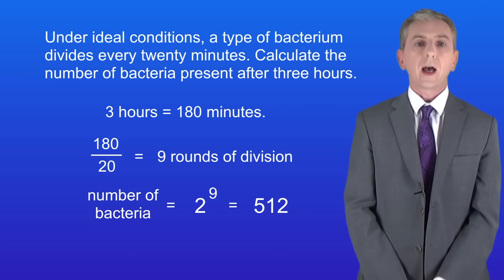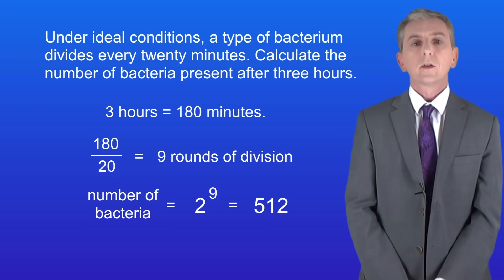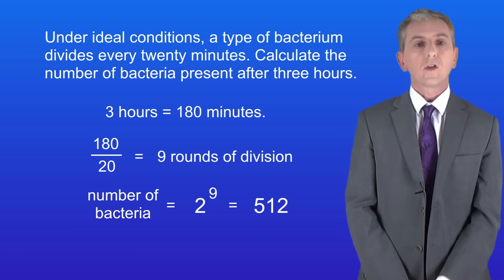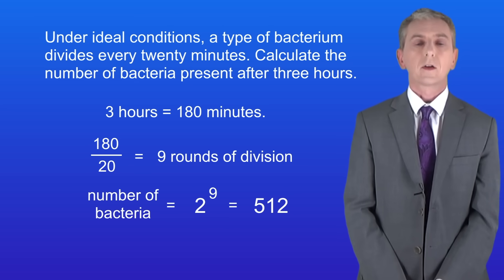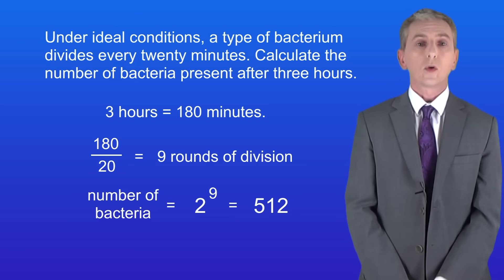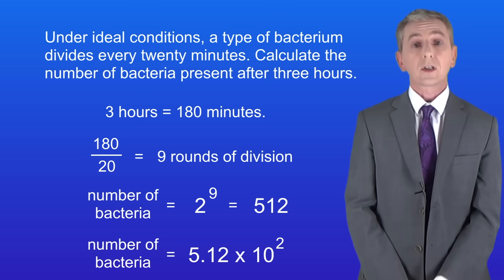If you're doing the higher paper, you need to be able to express your answer in standard form. To do this, start by taking the first digit — in this case, 5. Then count the number of digits after that; in this case there are two more digits. So 512 is 5.12 times 10 to the power of 2.